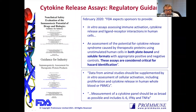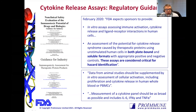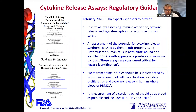The FDA guidance is very clear on this. The latest guidance — the non-clinical safety evaluation of immunotoxic potential of drugs and biologics — expects responses to provide in vitro assays, ligand receptor interactions in human cells, and an assessment of the potential for cytokine release syndrome caused by therapeutic proteins using unstimulated human cells in both plate-bound and soluble formats with appropriate positive and negative controls. These assays are considered critical for hazard identification. The guidance also states that data from animal studies should be supplemented by in vitro assessment of cellular activation, including proliferation and cytokine release in human whole blood or PBMCs, with a cytokine panel as broad as possible including IL-6, interferon gamma, and TNF-alpha.